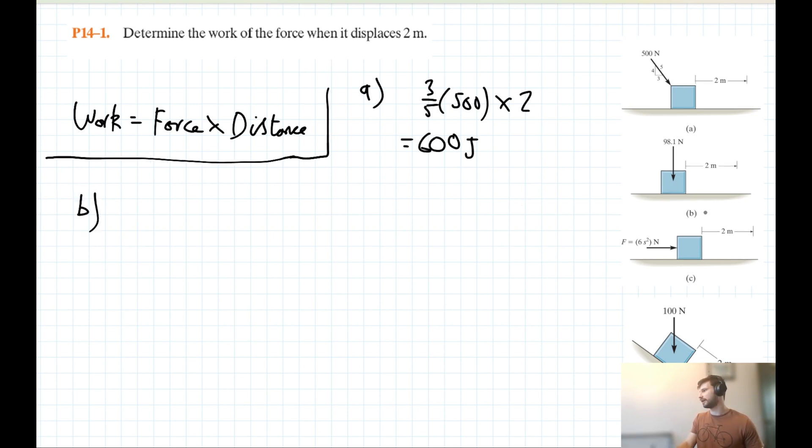Problem B then. We have this 98.1N force acting down on the block, and we're asking what's the work done in the horizontal direction? Well, evidently, there is no work being done in the horizontal direction, since there's nothing pushing it horizontally. It's almost like a trick question. The answer to that is zero joules.